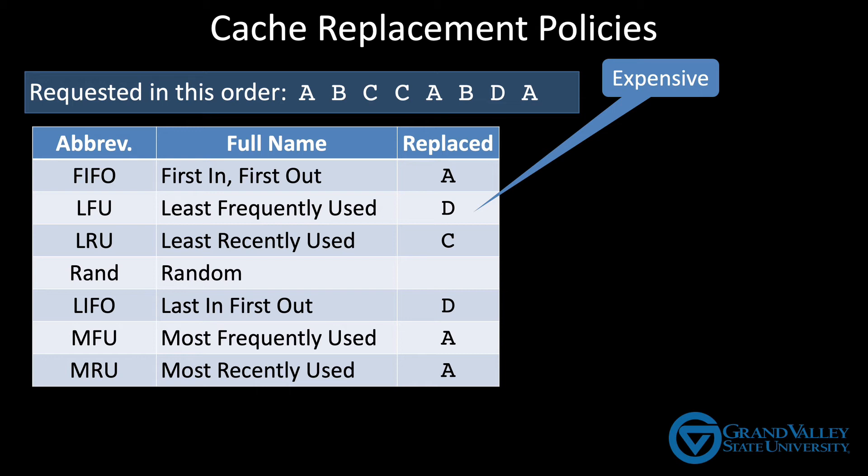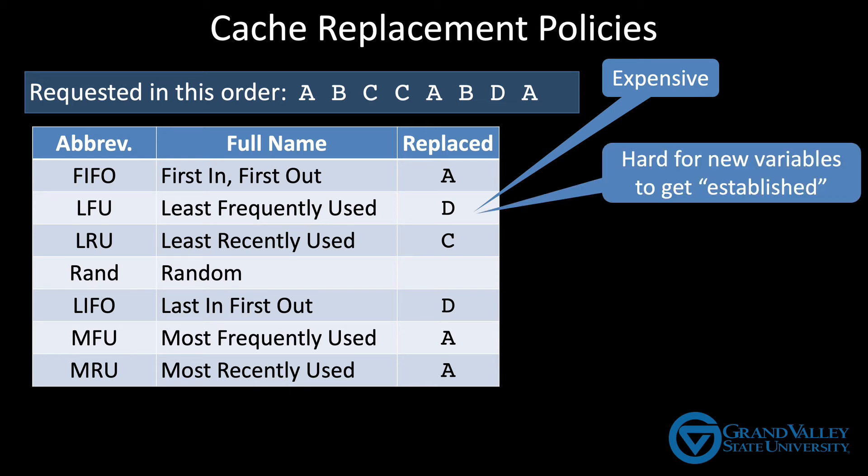Also, the problem with least frequently used is it doesn't give variables enough time to get established. When you access a variable for the very first time, it's necessarily going to be the least frequently used — you've only asked for it once. That puts it at risk of being evicted before the program has had a chance to run enough for us to figure out how often we're even going to want that variable. So although this algorithm is initially appealing, it's not all that popular.